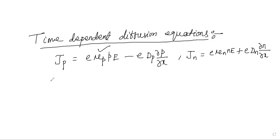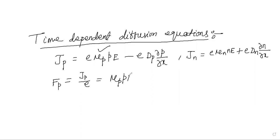Now we can write the flux for holes, or hole flux, as J_P divided by E. J_P is the current density for holes; dividing by the charge of the electron gives the number of holes passing per unit area. Dividing through by E, the hole flux becomes: mu_P times P times E, minus D_P times del P by del x.